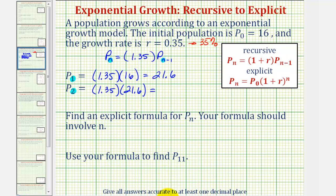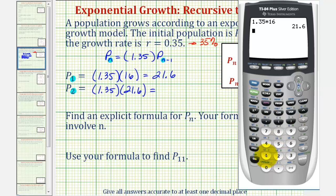Using the calculator, 1.35 times 21.6 equals 29.16.